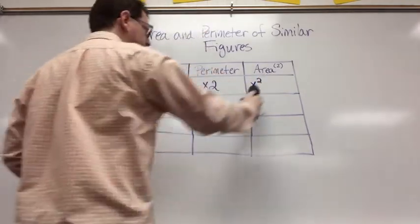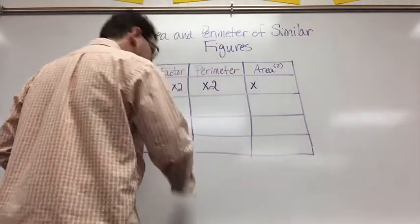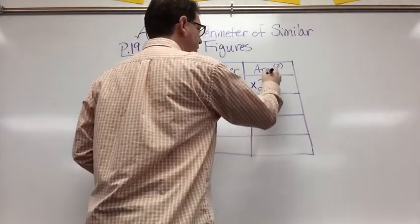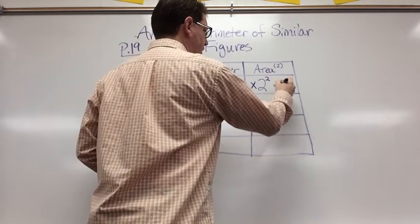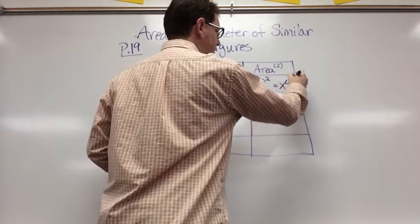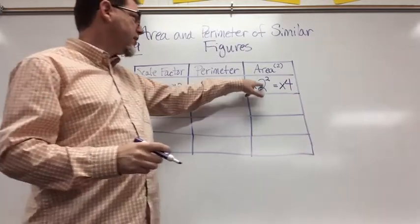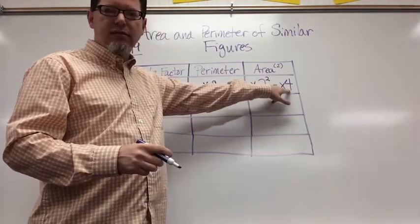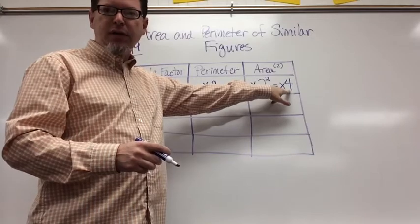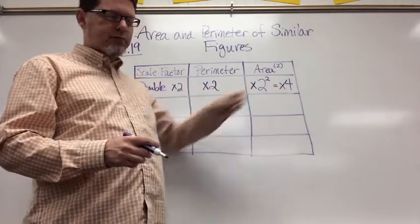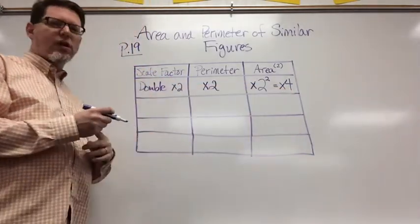And I wrote that wrong, it's times 2 squared which is the same as times 4. So I take my scale factor and square it to figure out what I'm going to multiply by to get my new area. I'll let that soak in just a bit.